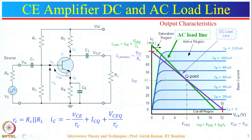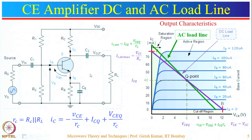We are interested in the AC power delivered to the load, so we need to see the AC load line. The AC and DC load lines differ because the impedance seen at the collector end differs for DC and AC circuits. For DC, the capacitors act as infinite impedance, so impedance is only R_C. For AC analysis, all supply sources and decoupling capacitors are short-circuited, so the impedance becomes the parallel combination of R_C and R_L.